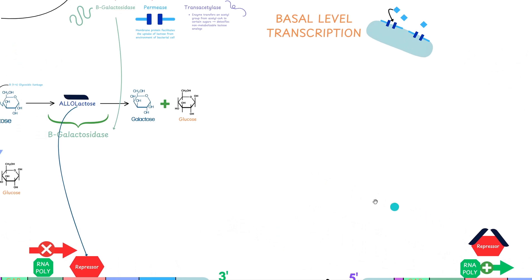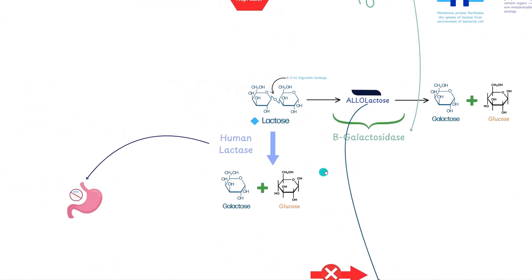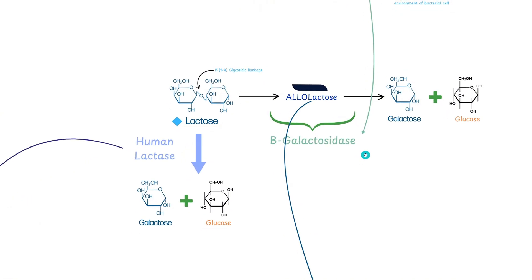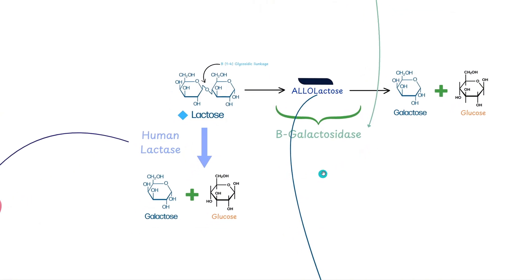One interesting comparison is actually how E. coli use beta-galactosidase like we see here, while humans actually use lactase to break down lactose. In humans, we have lactase breaks down the beta-1,4 glycosidic linkage to convert lactose into glucose and galactose.